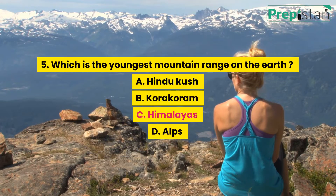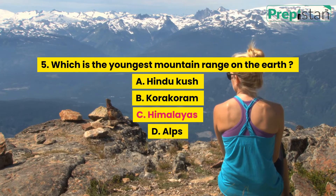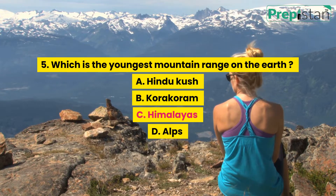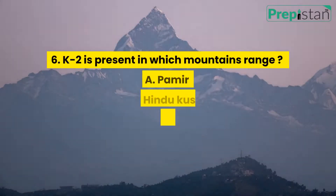Question 5: Which is the youngest mountain range on the earth? A. Hindu Kush, B. Karakoram, C. Himalayas, D. Alps.